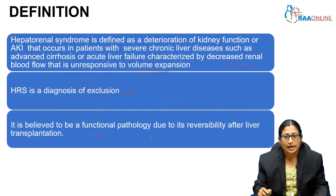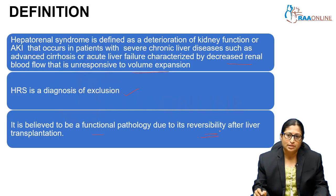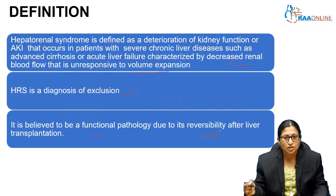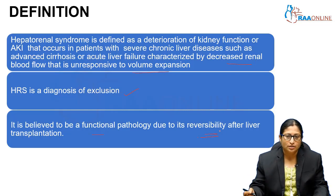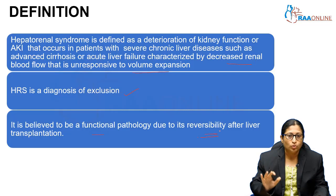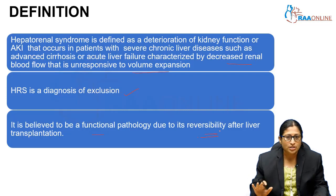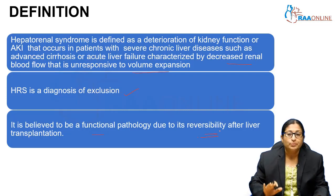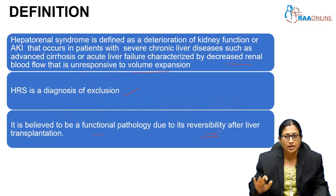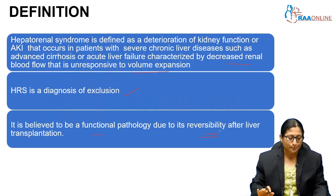Why is it considered a functional pathology? Because it gets reversed with liver transplantation. This is a functional renal dysfunction — there is no structural pathology in the kidney. There is only a functional dysfunction which gets reversed after liver transplantation.